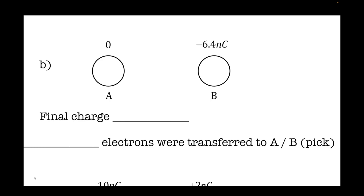Conductors are usually metals, and they conduct electricity in terms of electrons traveling through them, onto them, and off of them. So conductors have electrons that are free to move — they're easily movable. And then, if there is a path for electrons to travel, they will do so.